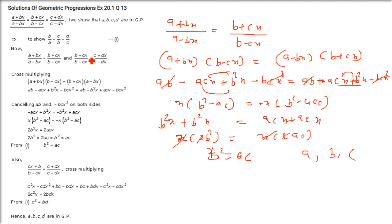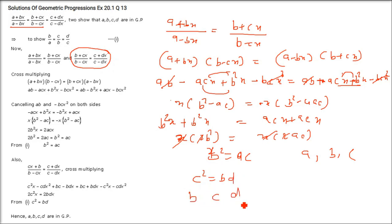That's the first part. Doing the same with the second and third expressions gives C² = BD, meaning B, C, D are also in GP. Since A,B,C are in GP and B,C,D are in GP, it follows that A, B, C, D are in GP.